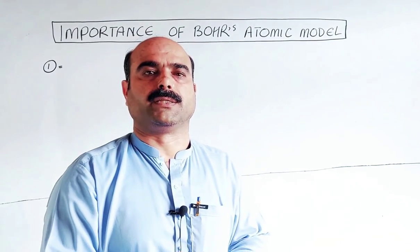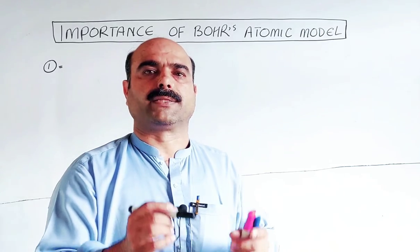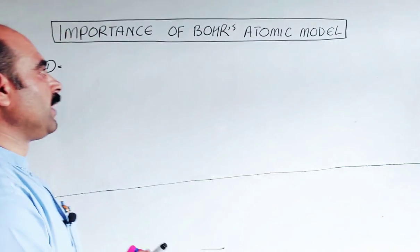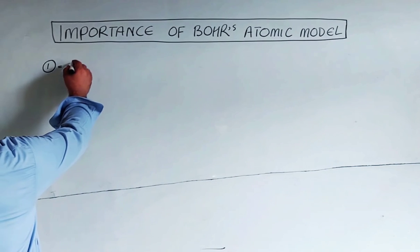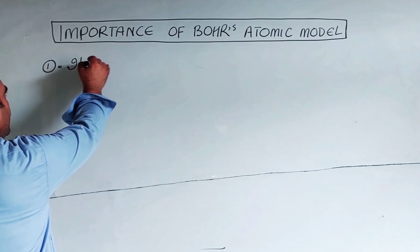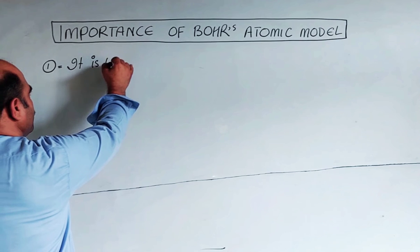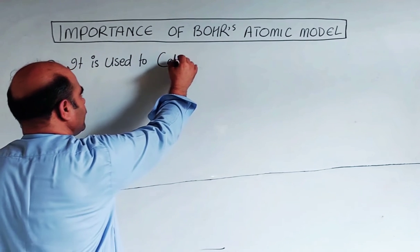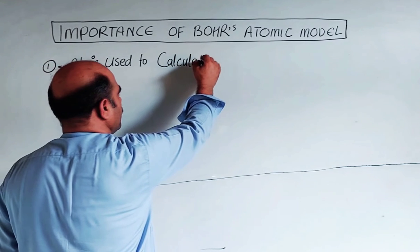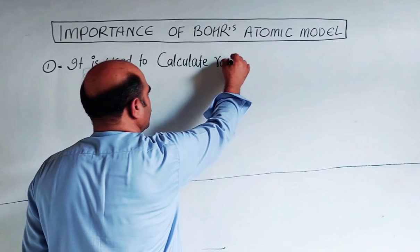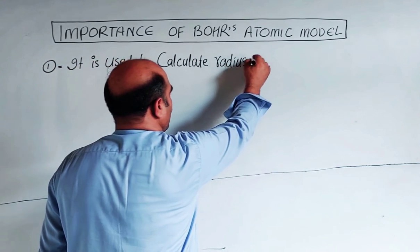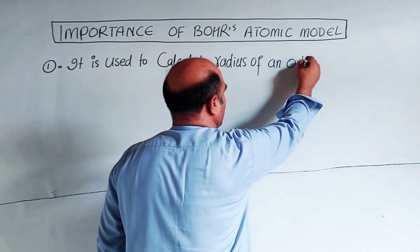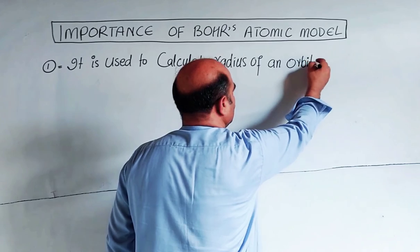This is an important short question topic: Write down the importance of Bohr's atomic model. Number one: it is used to calculate radius of an orbit. The Bohr atomic model helps us find any orbit's radius.